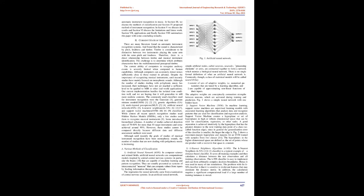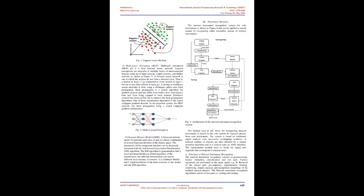In an artificial neural network (Fig. 1), simple artificial nodes called neurons, neurodes, processing elements, or units are connected together to form a network which mimics a biological neural network. Commonly, a class of statistical models will be called neural if they consist of sets of adaptive weights — numerical parameters tuned by a learning algorithm — and are capable of approximating nonlinear functions of their inputs. The adaptive weights are conceptually connection strengths between neurons, activated during training and prediction.